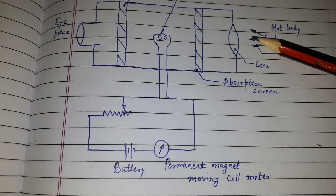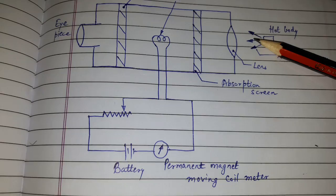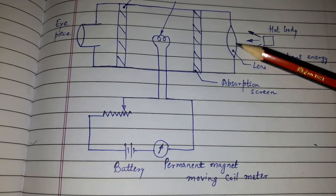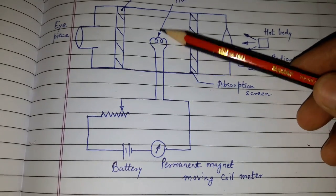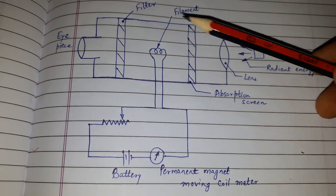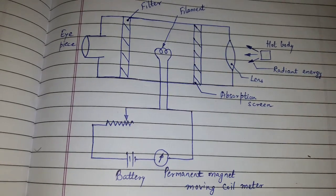An image of the hot body is adjusted with the help of a lens and is made to coincide with the filament. So the image of the object coincides with the filament.